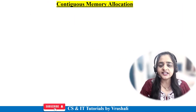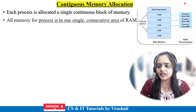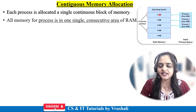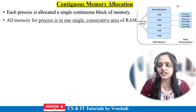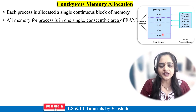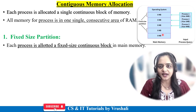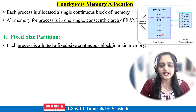First, let's understand what exactly contiguous memory allocation is. In this diagram, main memory in the operating system is divided into equal partitions — 5 MB each. In contiguous memory allocation, every process uses memory in a continuous block. This is divided into two types: fixed size partition and dynamic size partition.